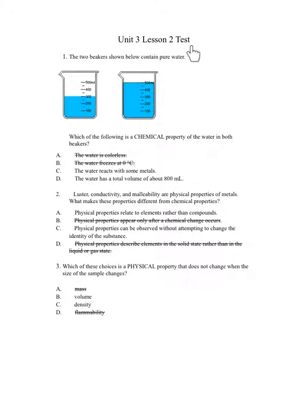Unit 3 Lesson 2 Test. Number 1. The beakers shown below contain pure water. Which of the following is a chemical property of the water in both beakers? A. The water is colorless. B. The water freezes at 0 degrees Celsius. C. The water reacts with some metals. D. The water has a total volume of about 800 milliliters.